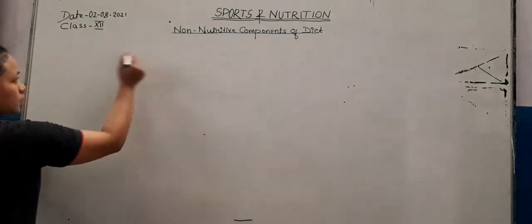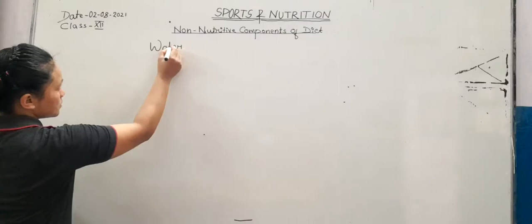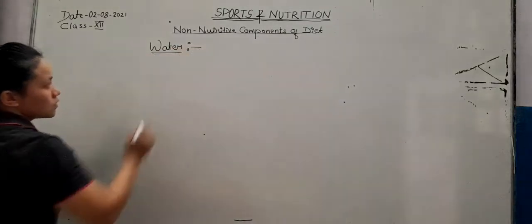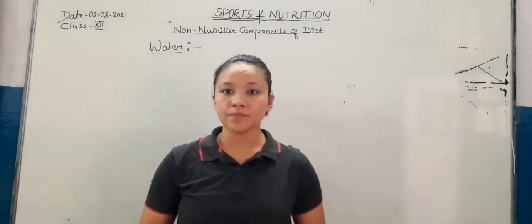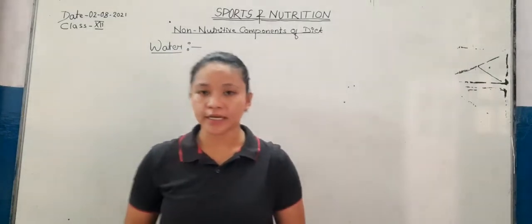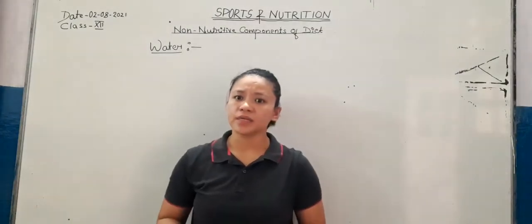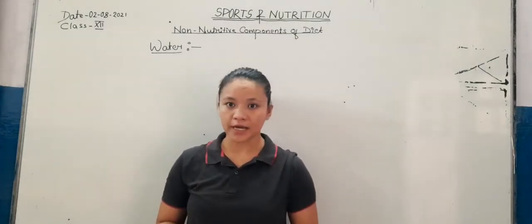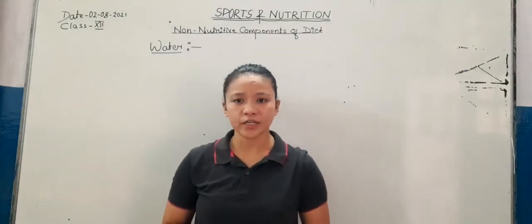First, water. Our body consists of approximately 70% water, and adults should take around 2 to 3 litres of water daily. In summer we should take more water compared to winters, and we should drink safe, clean and hygienic water.